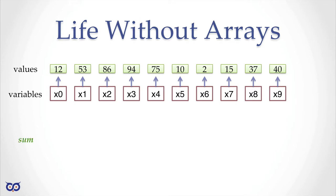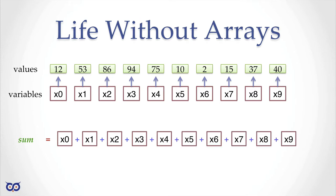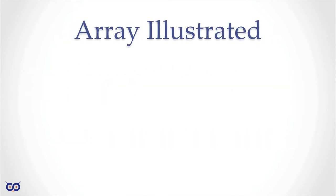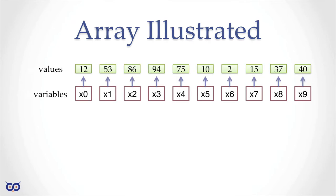If I wanted to calculate the sum, it would look like x0 + x1 + x2 + x3 and so on — cumbersome. What if I had a hundred or a thousand? Say these numbers represent temperature records over a few years and I want the average over 10 years: that's 10 × 365 days, thousands of data points. We couldn't possibly use an individual variable for each value. Life without an array in that situation is painful.